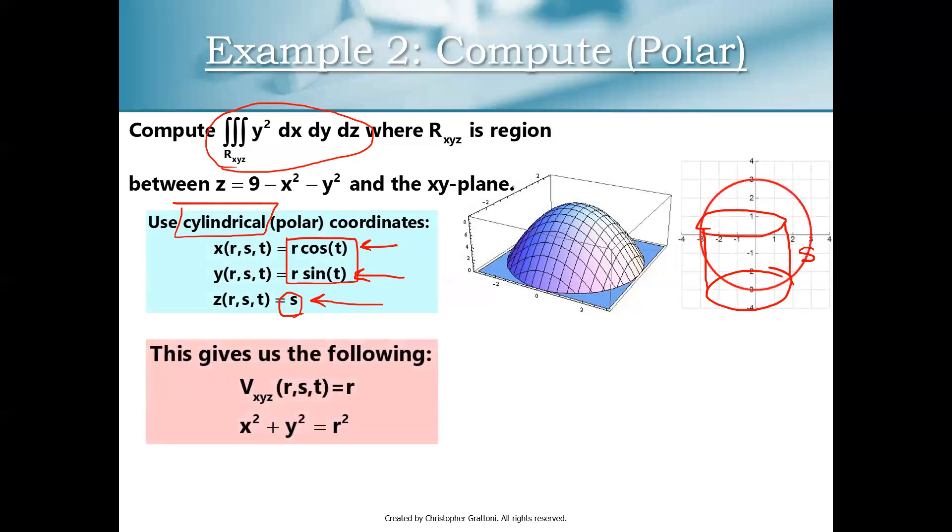A couple other things to know here. We have a volume conversion factor equal to r. I think you guys are familiar with that from polar coordinates. It's the same Jacobian determinant you know from polar. And then we've used this on a few other examples in class, but just remember that when we're switching between polar and rectangular coordinates, we can write x squared plus y squared is equal to r squared.